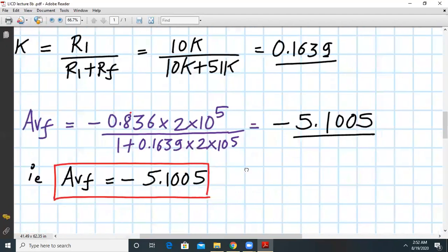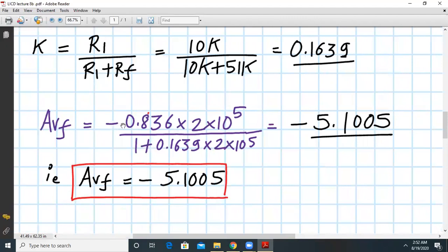We substitute this value. Avf is equal to minus 0.836 into 2 into 10 raise to 5 divided by 1 plus 0.1639 into 2 into 10 raise to 5. So that value will come out to be exactly around minus 5.1.